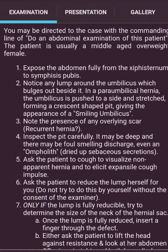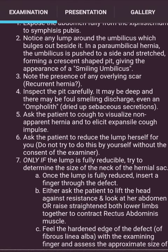Now, para-umbilical hernia. You may be directed with the command to do an abdominal examination. The patient is usually a middle-aged overweight female. Expose the abdomen fully from the xiphisternum to the symphysis pubis. Notice any lump around the umbilicus which bulges out beside it. In a para-umbilical hernia, the umbilicus is pushed to one side and stretched, forming a crescent-shaped pit — giving the appearance of a smiling umbilicus.